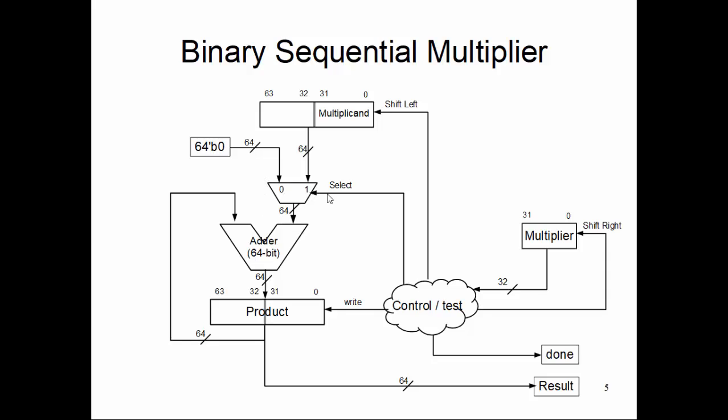This multiplexer is a 2-by-1, 64-bit multiplexer. Both selection inputs have 64 bits - either we want to select zero to be added onto the product, or the multiplicand register, that whole 64 bits, to be added on top of the product. This is what this 2-by-1, 64-bit multiplexer is deployed for.